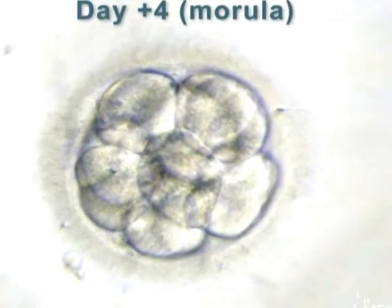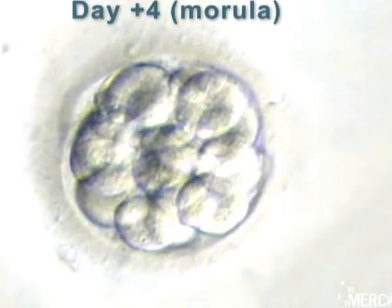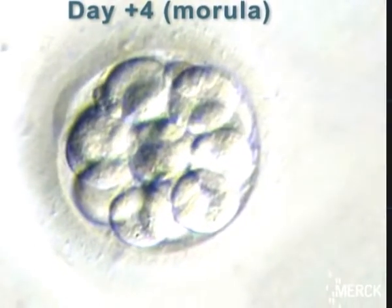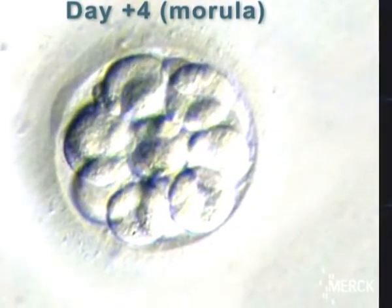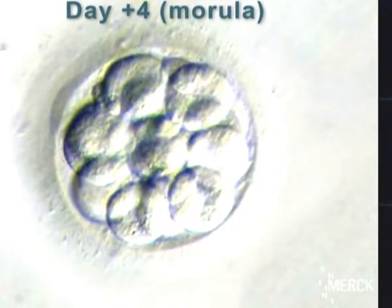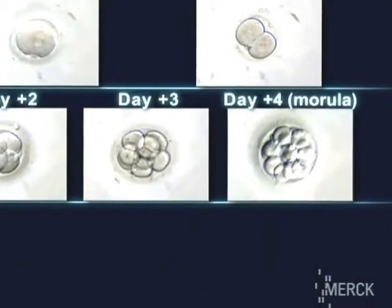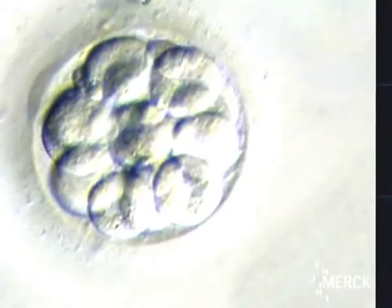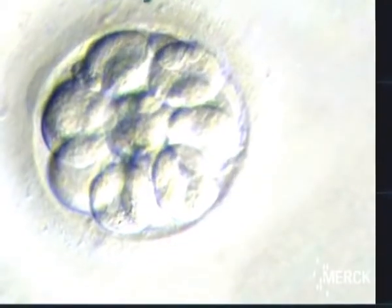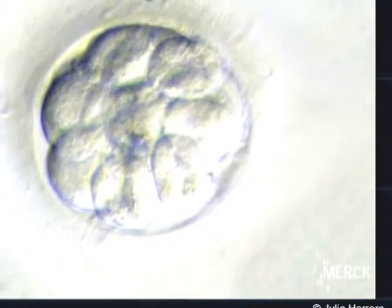On day four, the embryo divides a number of times, becoming a morula. This is when it begins to become compact.